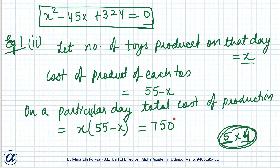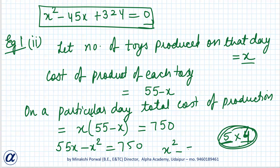Total cost of production equals cost of one toy multiplied by number of toys. So total cost equals x into (55 minus x), which equals 750. Multiplying out: 55x minus x² equals 750. Rearranging: x² minus 55x plus 750 equals 0. This is the quadratic equation.